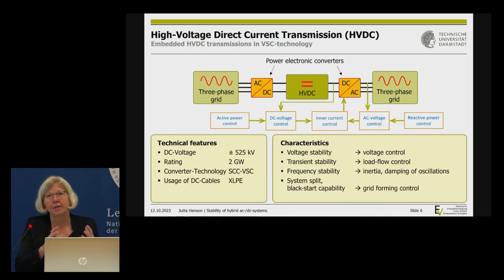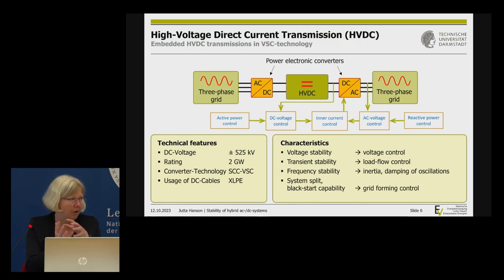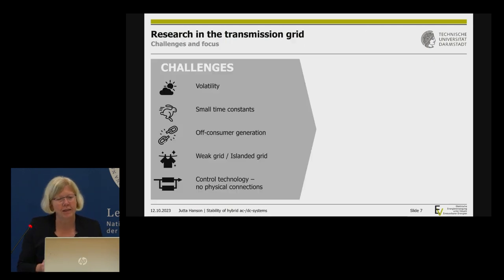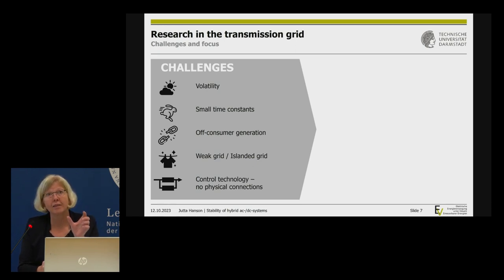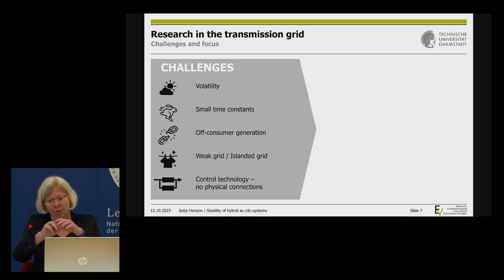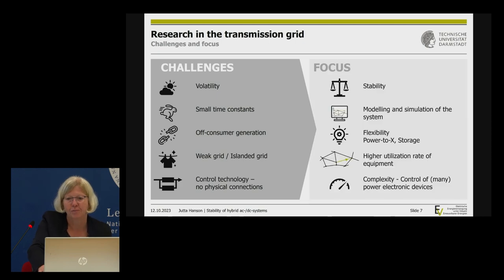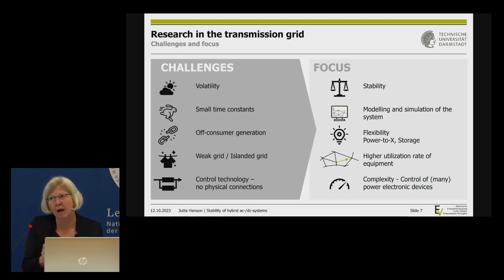With the power electronics converter, we can control the behavior and characteristics of HVDC connections within the network. Research challenges include: fluctuating in-feed, small time constants indicating a faster network, off-consumer generation, weak grid conditions, and advanced control. The first step is modeling and simulation — how to model everything with these smaller time constants that we weren't used to at this scale.